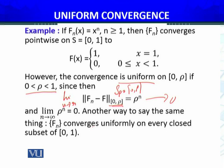So we have the uniform convergence by criteria of the uniform convergence, that limit n approaches to infinity, ||f_n - f|| norm over the set S_ρ, in this particular case, equal 0. Rho 0 or 1 ke dermyan hoga, toh yeh limit n approaches to infinity jo hai, woh 0 aayegi.